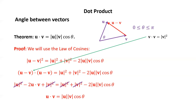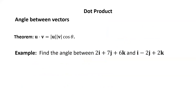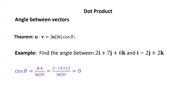Let's find the angle between u = 2i + 7j + 6k and v = i - 2j + 2k. By the theorem, cos(θ) = (u·v) / (|u|·|v|). Computing u·v: 2×1 = 2, 7×(-2) = -14, 6×2 = 12; adding gives 0. Since the numerator is zero, cos(θ) = 0, and since θ is between 0 and π, we get θ = π/2.